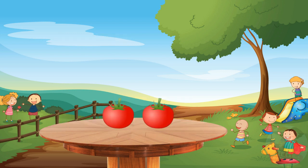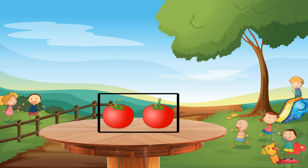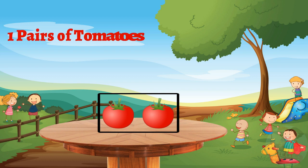Now take the example of tomato. First pair. One pair of tomato with no tomato left. So it's even.